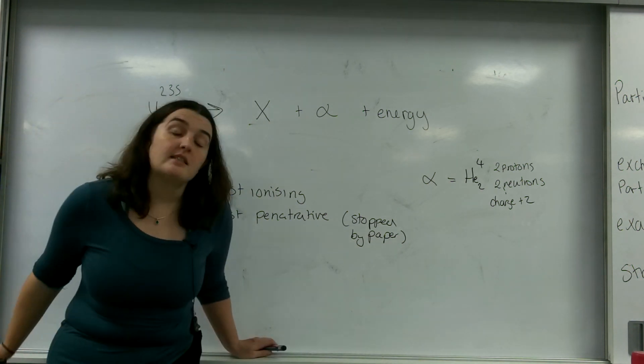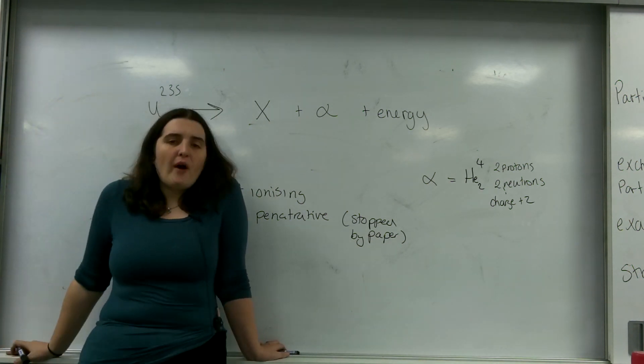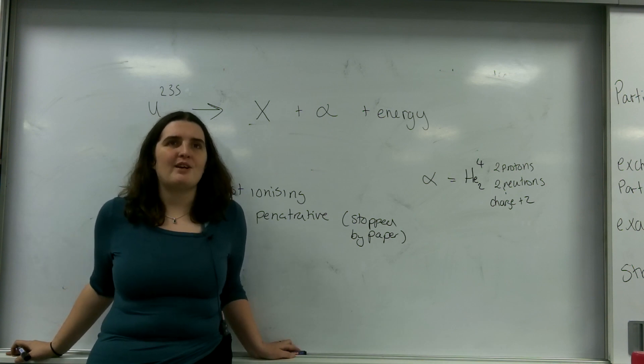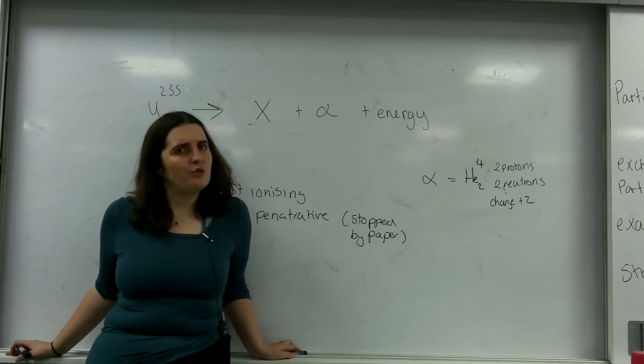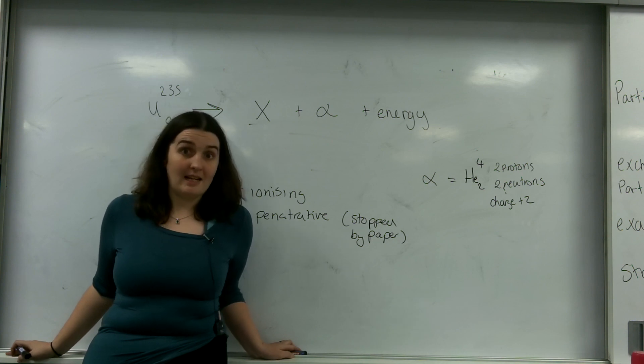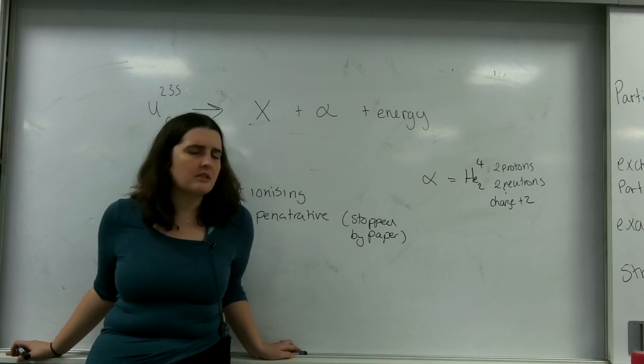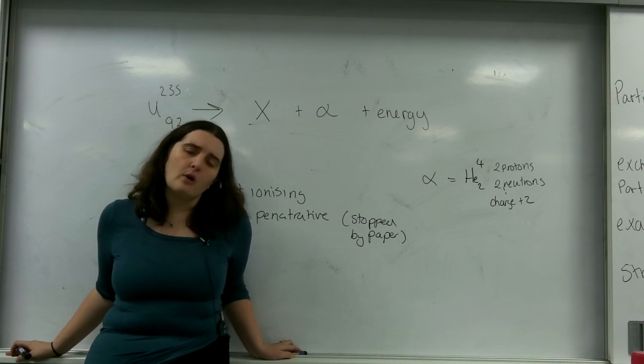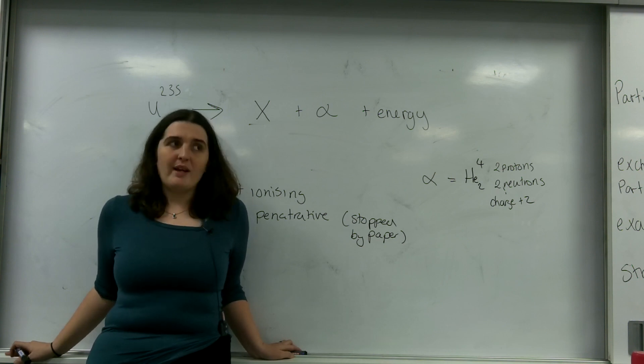The reason for this is because it has a lot of mass. It's two protons and two neutrons. When that hits an electron, so remember ionising is the gain or loss of electrons,